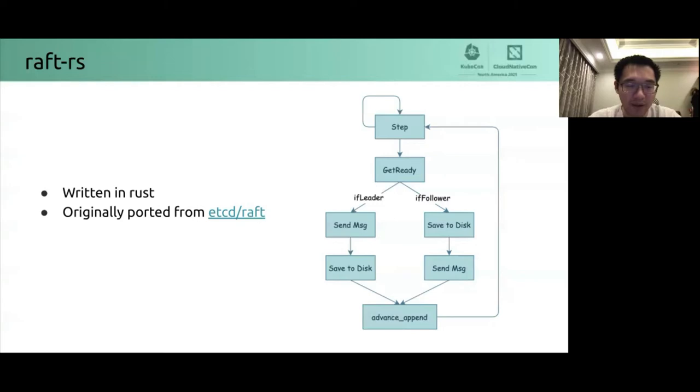Then, let's look at the flow chart. At the first of each round, store threads calls step to handle multiple messages. For example, for the leader, the store threads can propose commands and handle the append response from the follower. For the follower, the store threads can handle append requests from the leader.